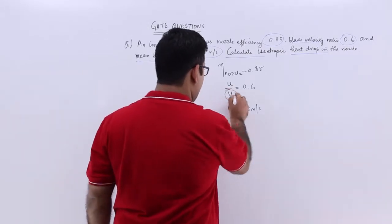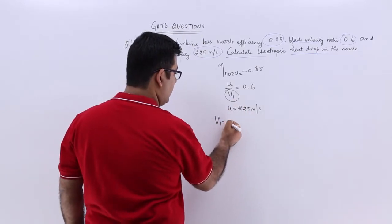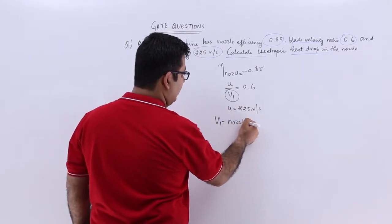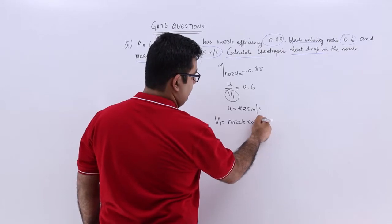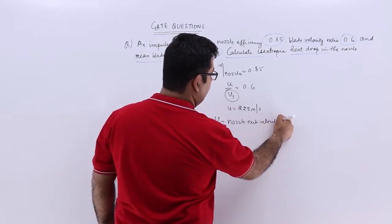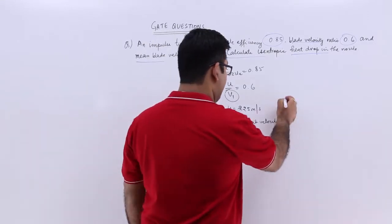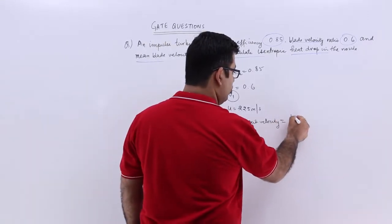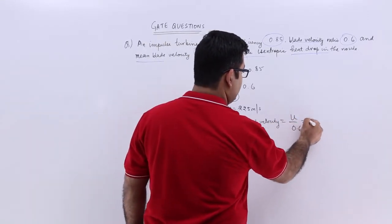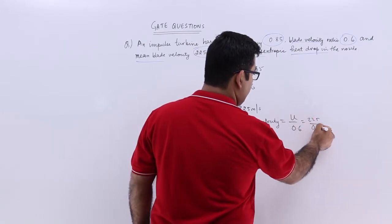v1 is the nozzle exit velocity, and this equals u divided by 0.6, which is 225 by 0.6.